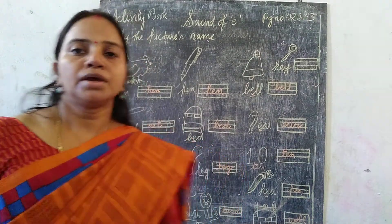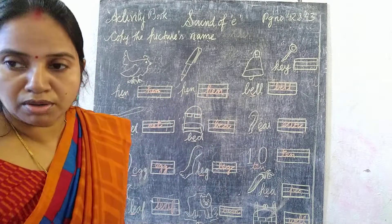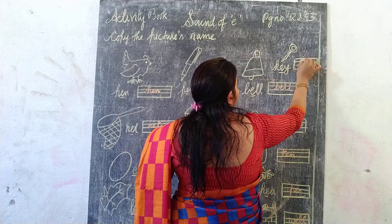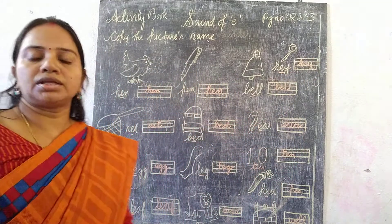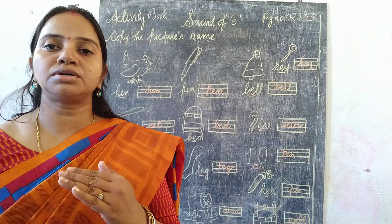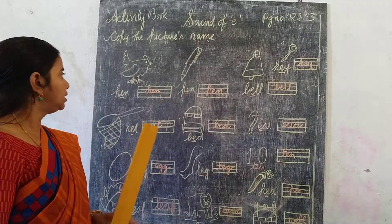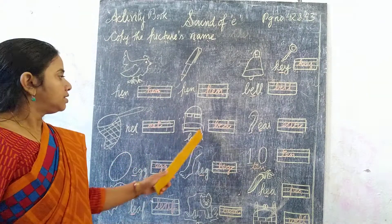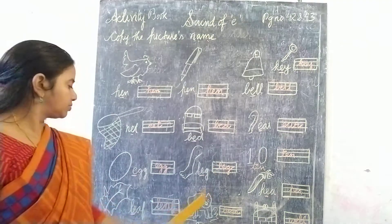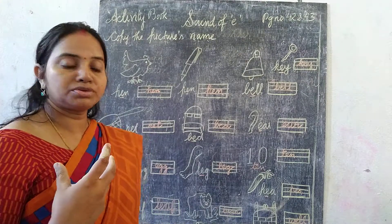So you have seen these pictures. We will focus more on E. Like: P, E, N — Pen; H, E, N — Hen; N, E, T — Net; B, E, T — Bet; E, G — Egg; L, E, G — Leg; L, E, A, F — Leaf. So we will show E and pressurize more on E when we pronounce these words.